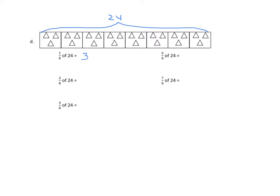Continuing, three-eighths of 24. Now again, if I were to bracket it, I would have a bracket spanning 3 of these partitions here. And if I count them, one, two, three, four, five, six, seven, eight, nine. And I see that three-eighths is 9. Three-eighths of 24 is 9.